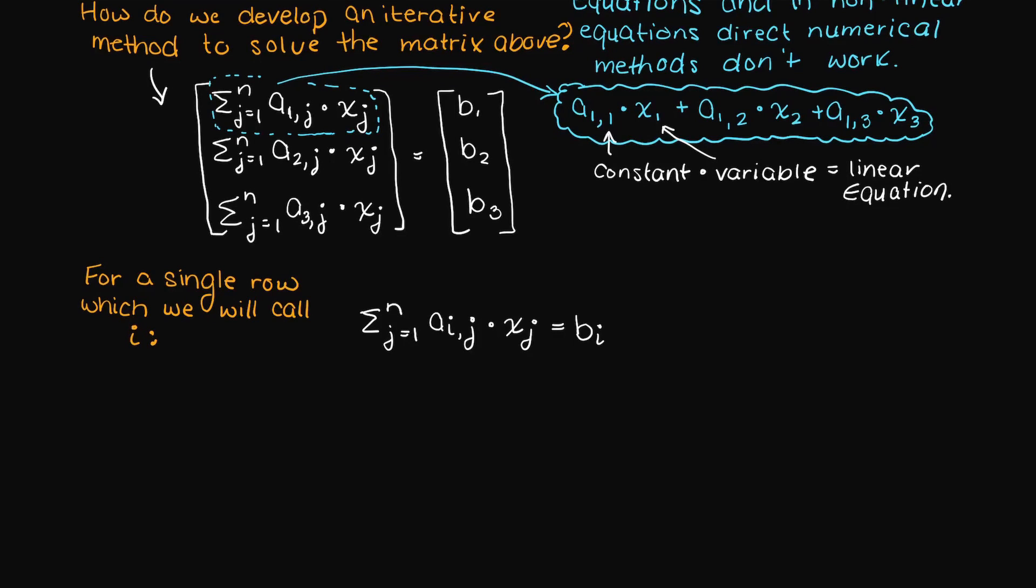Well, our goal is to find some x values - x1, x2, x3, etc. - that will give us the proper b values or the constant values in our constant vector at the end of each row.